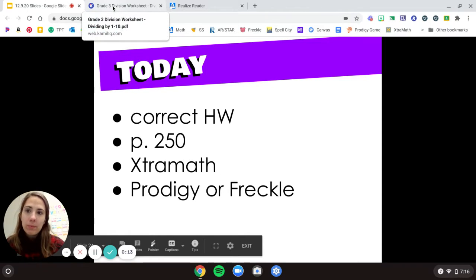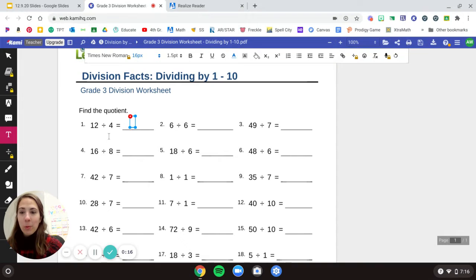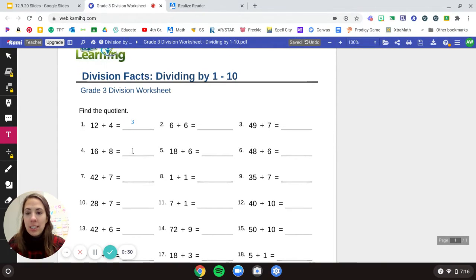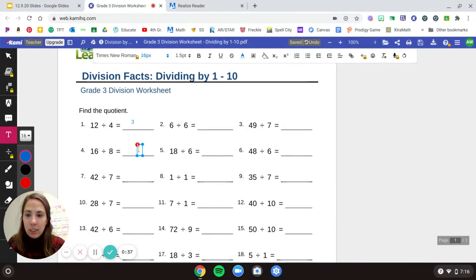So let's look at the homework. All right, so we have a bunch of division problems to solve, right? So let's look over these. We have 12 divided by 4 should be 3. 16 divided by 8 should be 2, because 2 times 8 is 16.